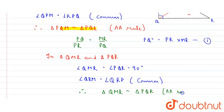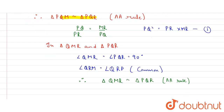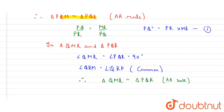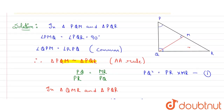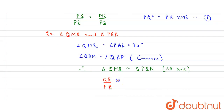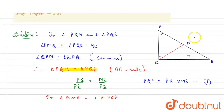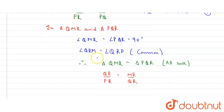Therefore, triangle QMR is similar to triangle PQR by the Angle-Angle rule. Using the ratio of corresponding sides: QR upon PR equals MR upon QR — where QR is the bottom line, PR is the hypotenuse, and MR is the segment shown in the figure. From this, we get: QR² = MR × PR. Mark this as equation 2.